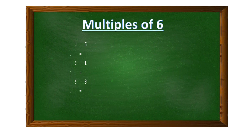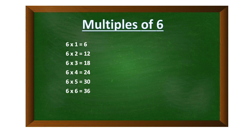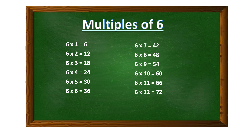Let's look at multiples of six. We have six times one is six, six times two is twelve, six times three is eighteen, six times four is twenty-four, six times five is thirty, six times six is thirty-six, six times seven is forty-two, six times eight is forty-eight.